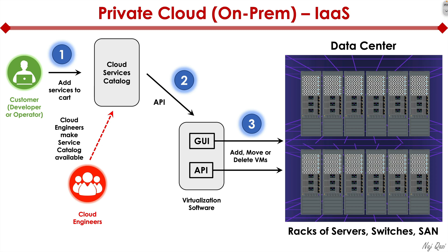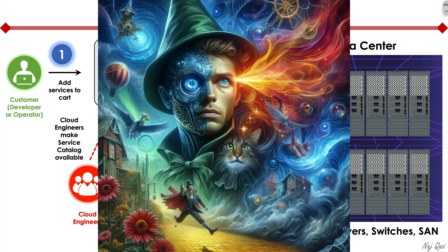So how is it that a developer can go to a web page and select small VM, medium VM, or large VM to deploy apps? Cloud engineers made that available, because remember, this is on-prem — our team made it available. Cloud engineers also configured the virtualization software to understand that automated workflow through API operations. There's no magic; the cloud engineering team is the wizard behind the scenes in this design.